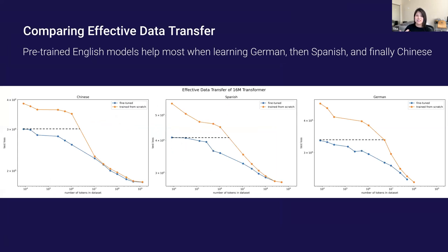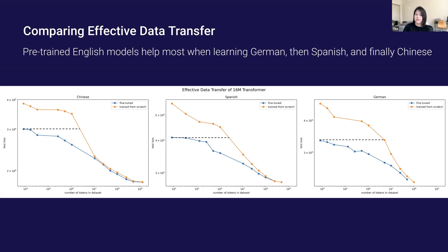Comparing the three languages, pre-trained English models help the most when learning German versus Spanish and Chinese. This reflects linguistic similarities: English and German are both derived from Proto-Germanic and are linguistically most similar. Although Spanish shares many symbols with the English alphabet, it's in a different language family. Chinese has a very different alphabet and is very distinct. Also, the effective data transfer for Spanish and Chinese is similar at small dataset sizes around 8,000 tokens, but as we increase dataset size, pre-training continues to help for Spanish for about another order of magnitude compared to Chinese.